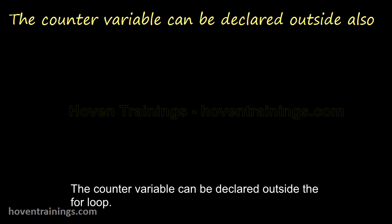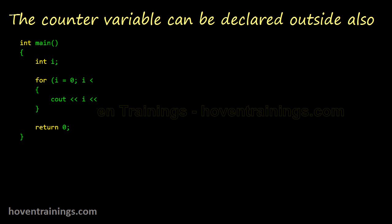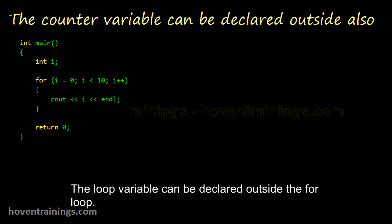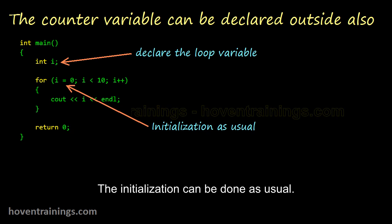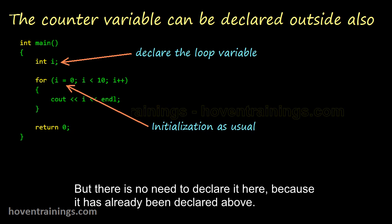The counter variable can be declared outside the for loop. The loop variable can be declared here. The initialization can be done as usual, but there is no need to declare it here because it has already been declared above.